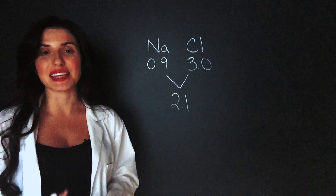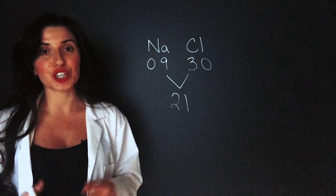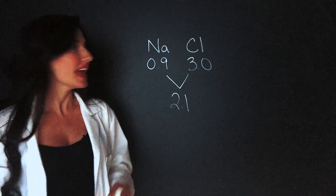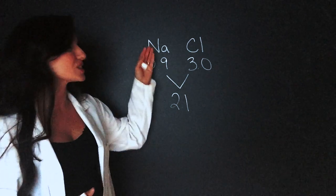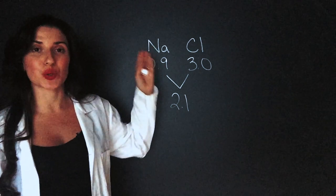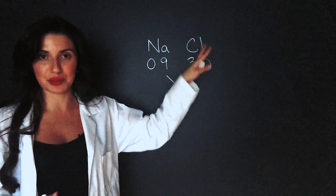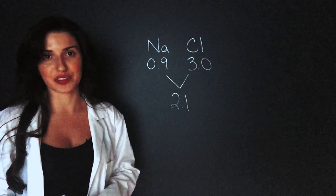Since 2.1 is greater than 1.9, we know that this bond is going to be ionic. Ionic means that the electrons are not going to be shared equally. In this case, sodium is going to give up its electron completely to chlorine.